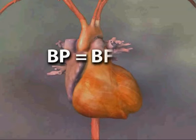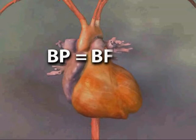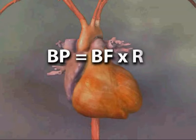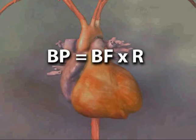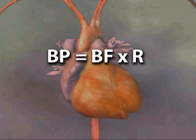Blood pressure is blood flow — the volume of blood pumped out of the heart per beat — multiplied by arteriolar resistance to the blood flow. Blood flow depends on the rate of heartbeats and the volume of blood pumped out with each beat.